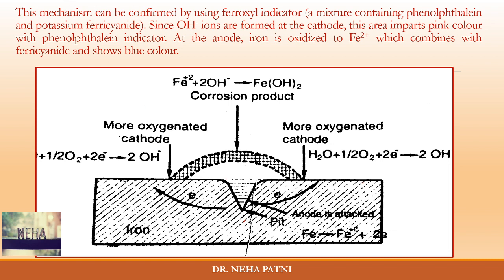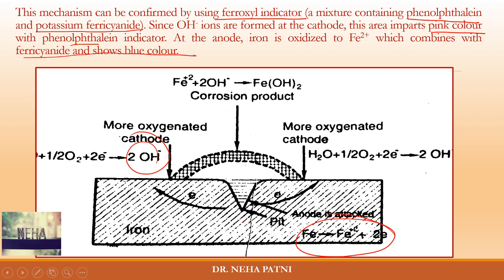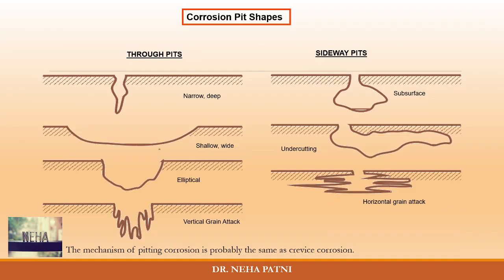To confirm pitting corrosion, a ferroxyle indicator test can be used. The ferroxyle indicator is a mixture of two indicators: phenolphthalein and potassium ferricyanide. At the cathode, OH⁻ ions are formed by reduction, making that area basic — which imparts a pink color to the phenolphthalein indicator. At the anode, iron is oxidized to Fe²⁺ ions, which combine with ferricyanide and show a blue color. These two colors confirm which area is anodic and which is cathodic.